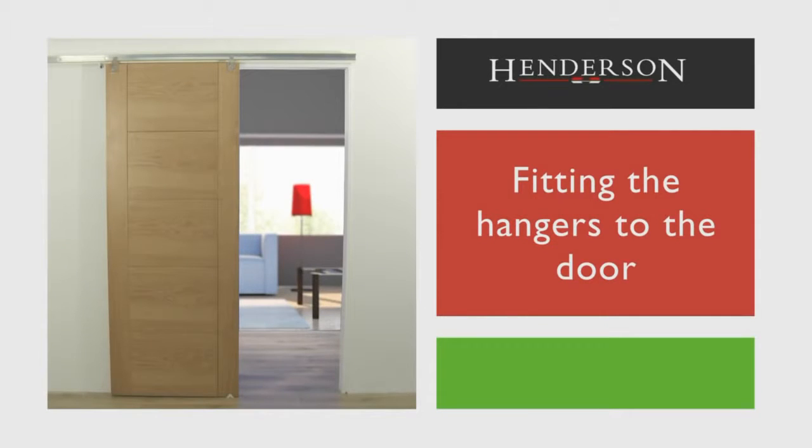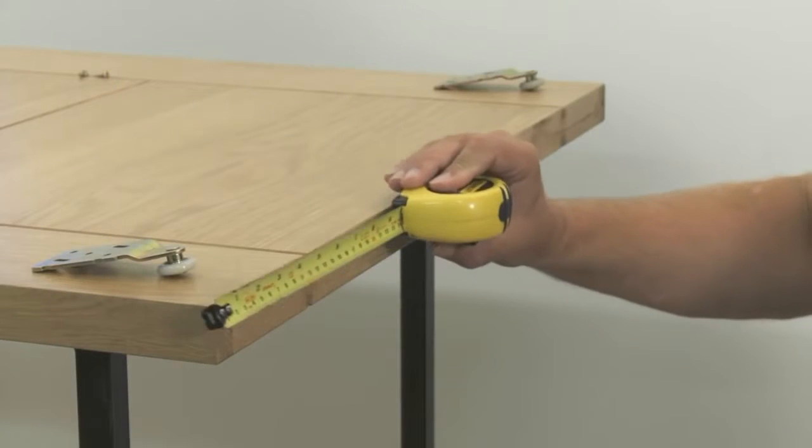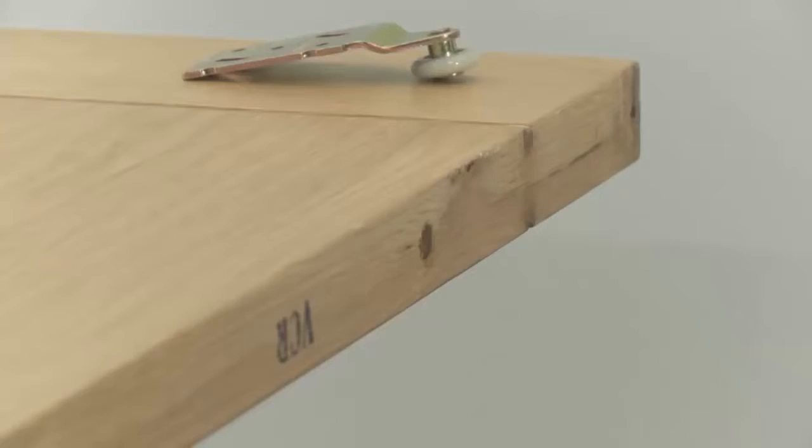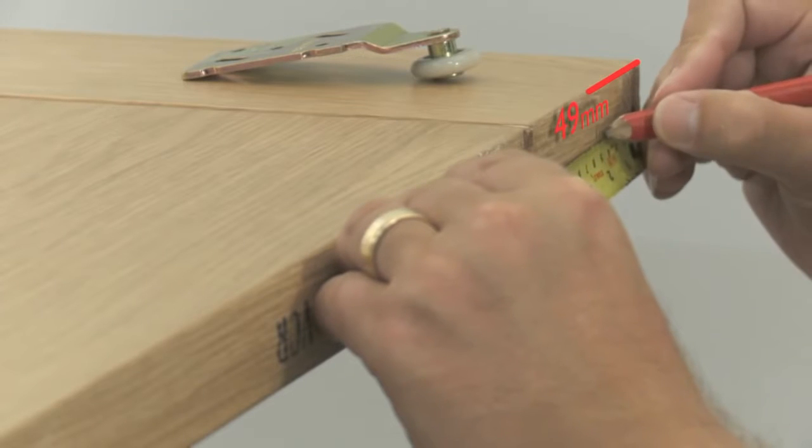Fitting the hangers to the door. To attach the hardware to the door, start by marking out the two hanger positions 50mm from each edge of the door.